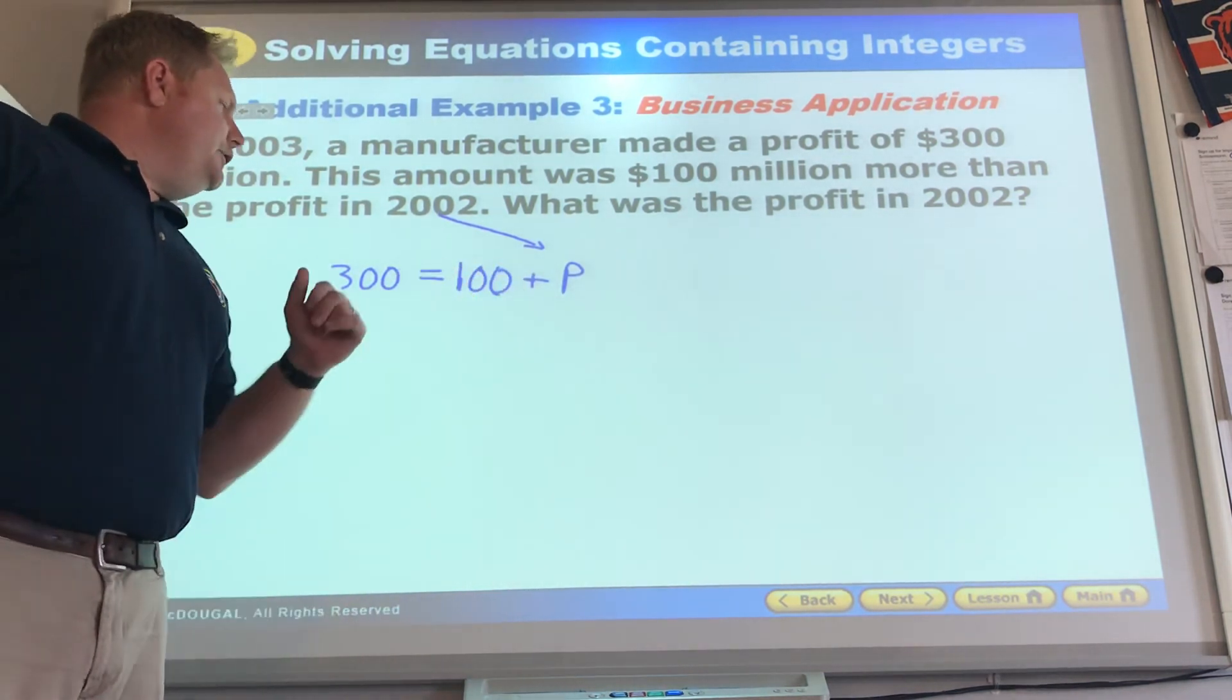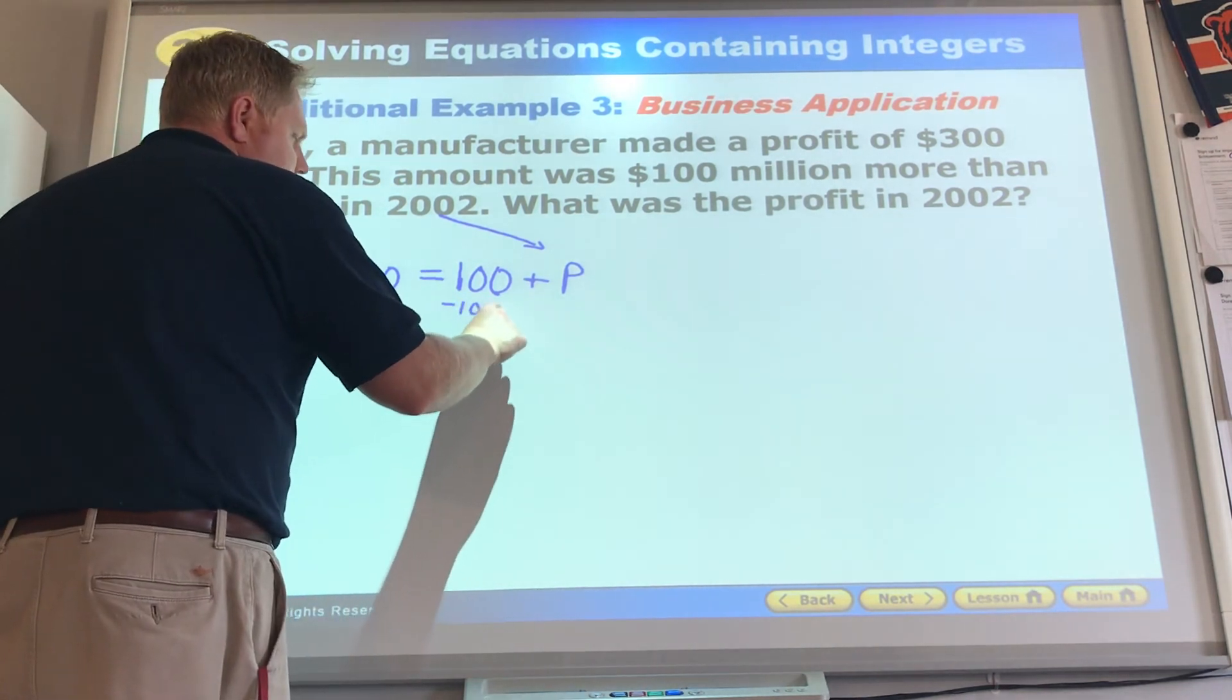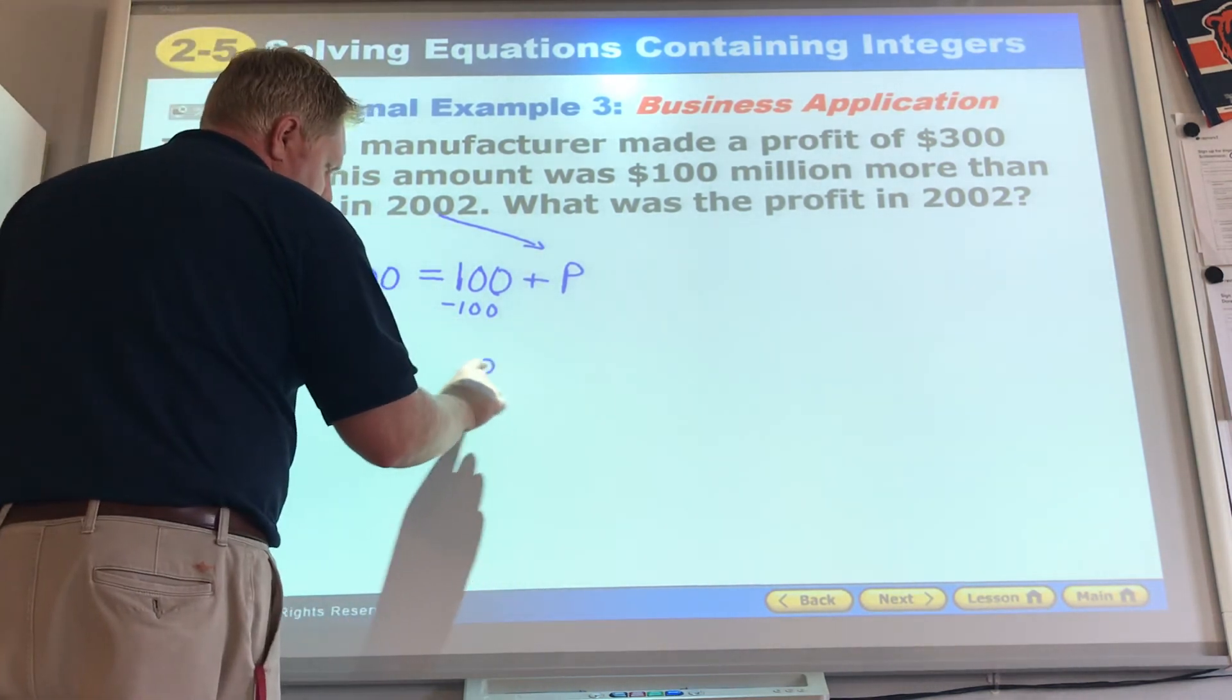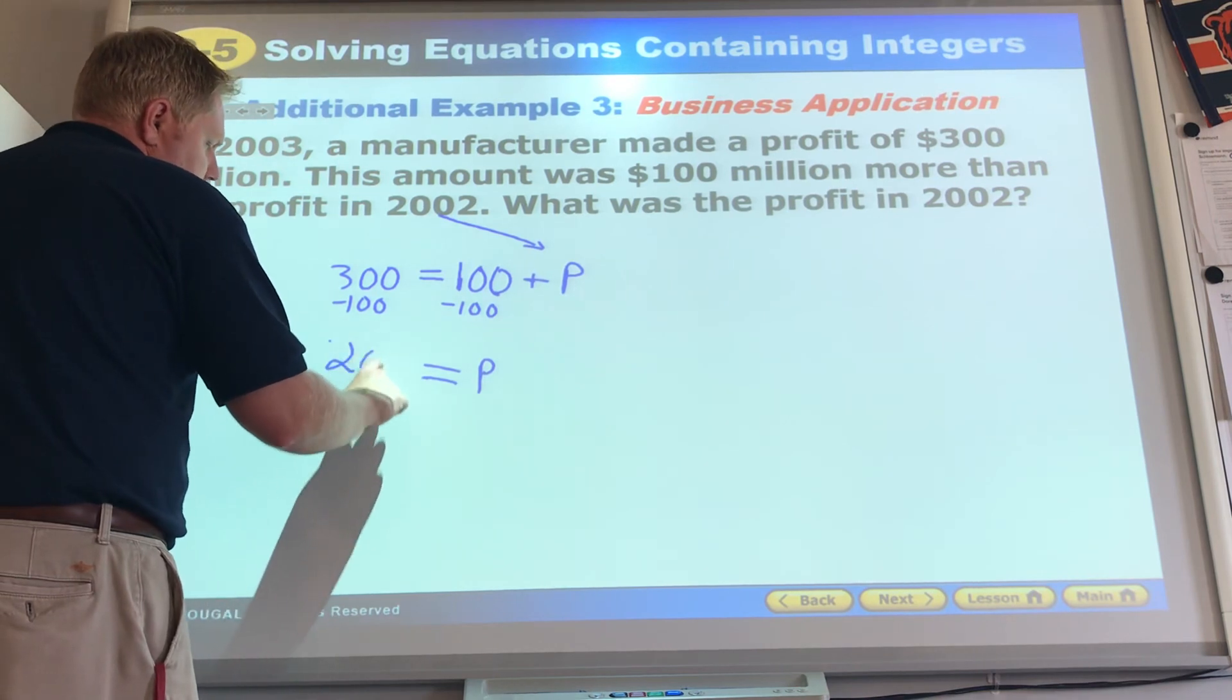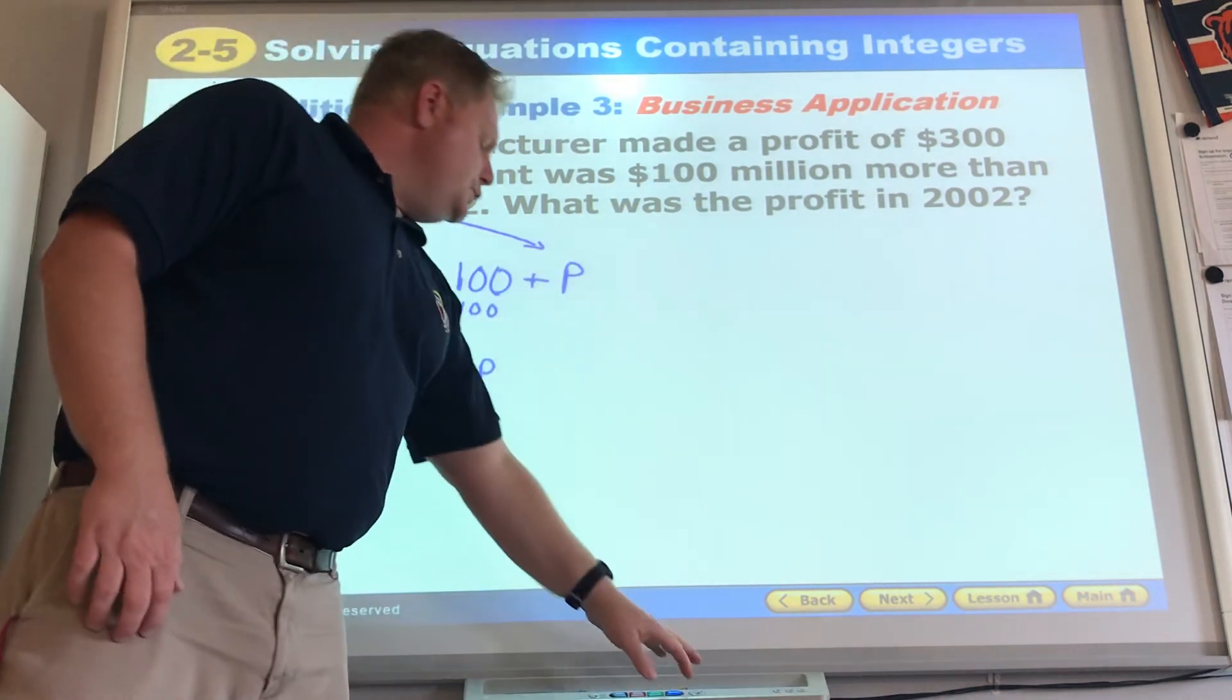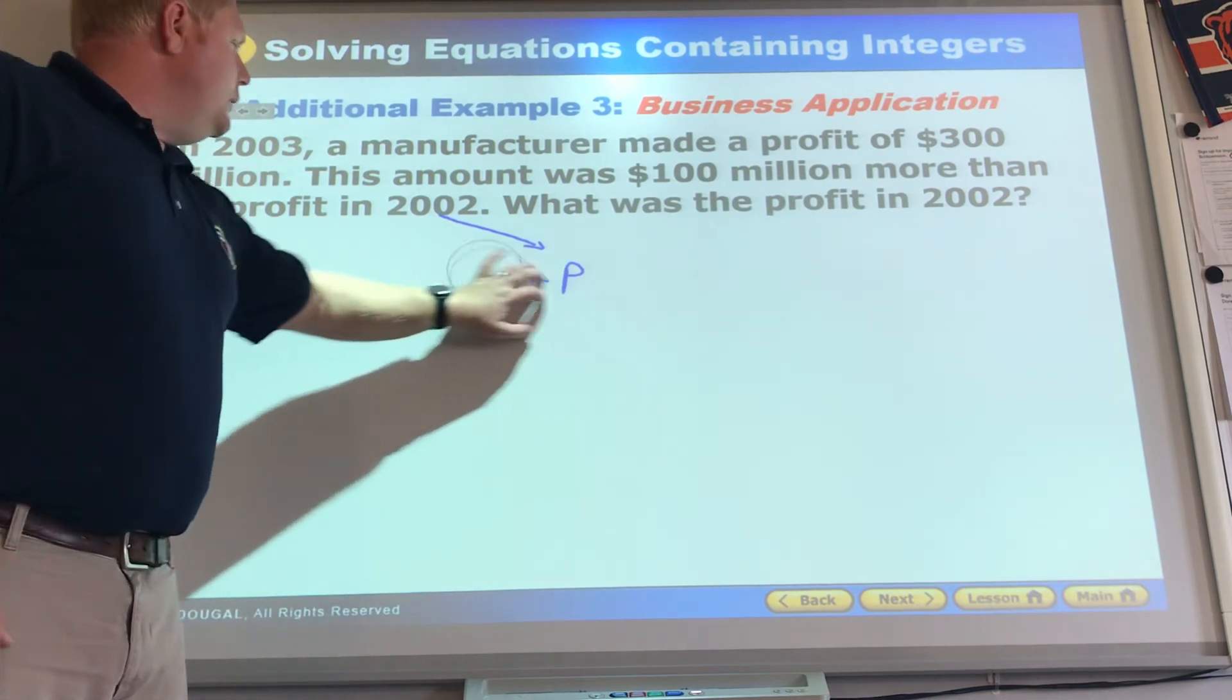$300 million is the profit that he made in 2003. This was $100 million more than the profit in 2002. I'm just going to put P in there for profit. Because I don't know what he made in 2002, so I just put P in there. P plus $100 million equals $300,000. Hopefully you see minus $100,000. Minus $100,000. What did he make in 2002? We're left with a P. We do our subtraction. It's a $200. $200 million was the profit. Don't forget it was $200 million.